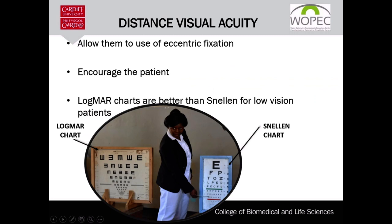When assessing visual acuity, clients are allowed to use eccentric fixation if they desire, or even move closer to the chart. You would have to comply if your client asks you to add more illumination to the chart. The main purpose is to get a baseline measure to work with. You would need to record all changes made in order to take the visual acuity, and you must give enough encouragement without putting undue pressure on the client.